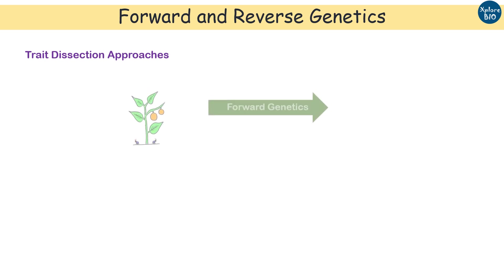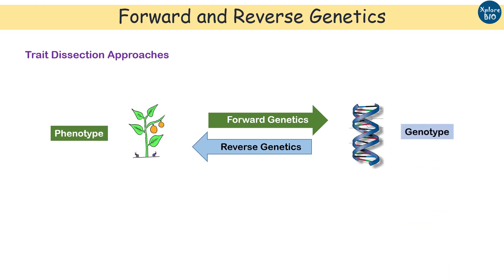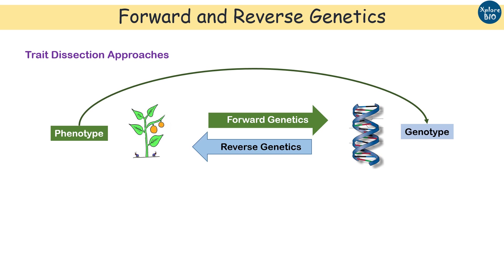Often we want to dissect or understand a particular trait. Forward and reverse genetics are the sum of approaches used to dissect or understand the effect of phenotype and genotype on each other. Forward genetics is about identification of genetic factors or genes responsible for a given trait of interest — we go from phenotype to genotype. In reverse genetics, we manipulate genetic factors or genes to see the effect on a particular trait — that is, we go from genotype to phenotype.